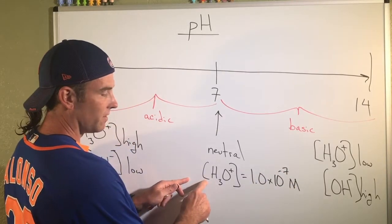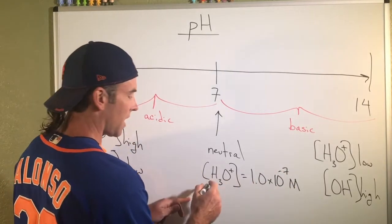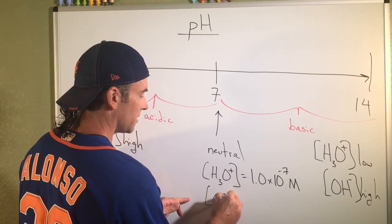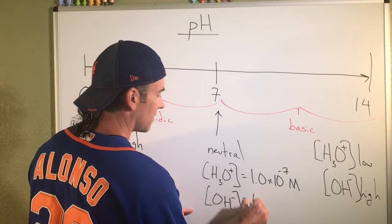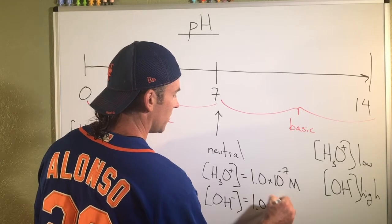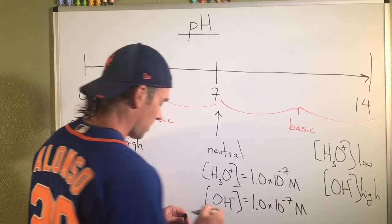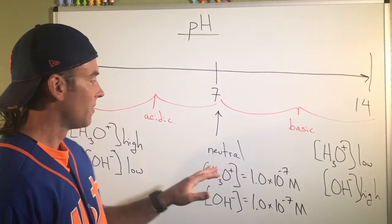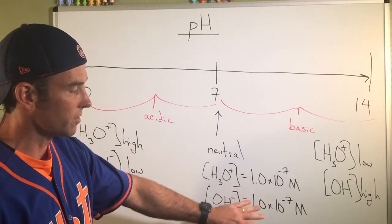And it turns out where that happens in terms of molarity, you're going to see that your concentration of H3O+ is equal to 1.0 x 10^-7 M. And your concentration of OH- is exactly equal to 1.0 x 10^-7 M. That's a neutral solution.